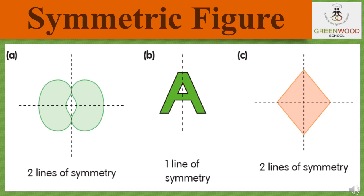The second one is capital letter A, and the line of symmetry is passing exactly through the middle vertical line of symmetry.